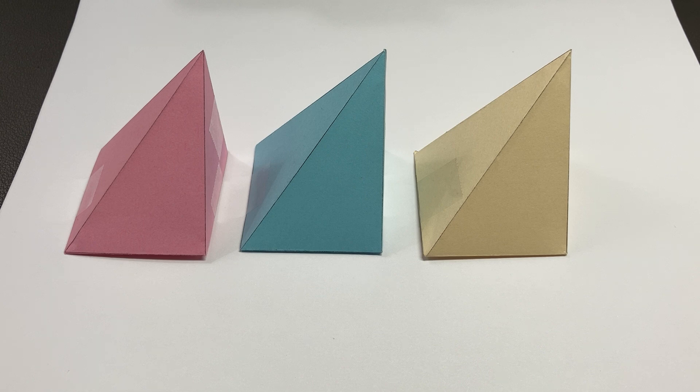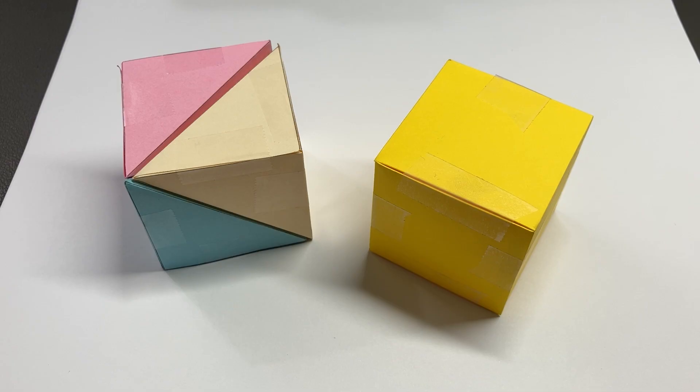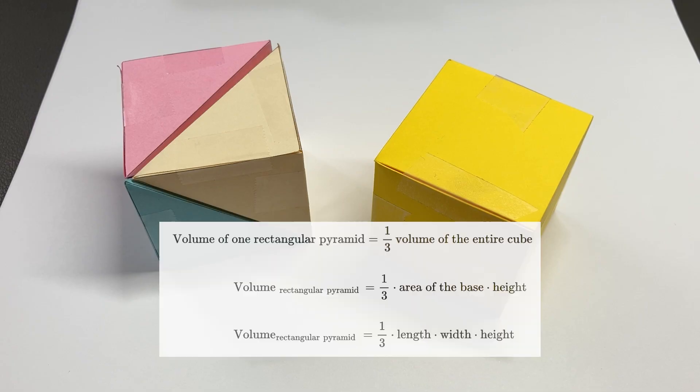Since all of these rectangular pyramids are congruent, they all have the same volume. To summarize so far, three congruent pyramids can form a cube, and the volume of one of the pyramids will be one-third of the volume of the entire cube. This is true for all cubes.